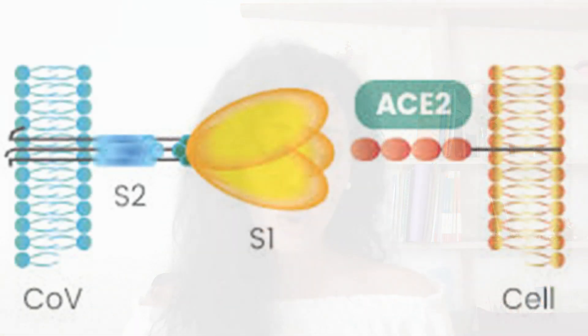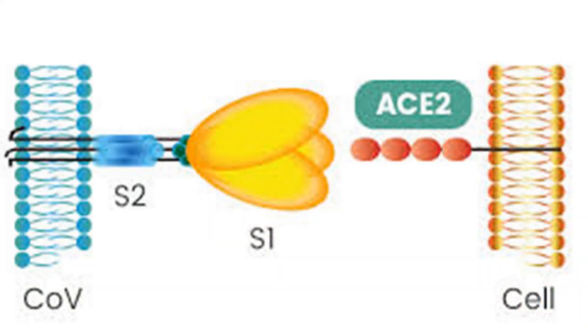The virus also has four important structural proteins. According to recent research, a spike mutation which probably occurred in late November 2019 triggered jumping to humans.